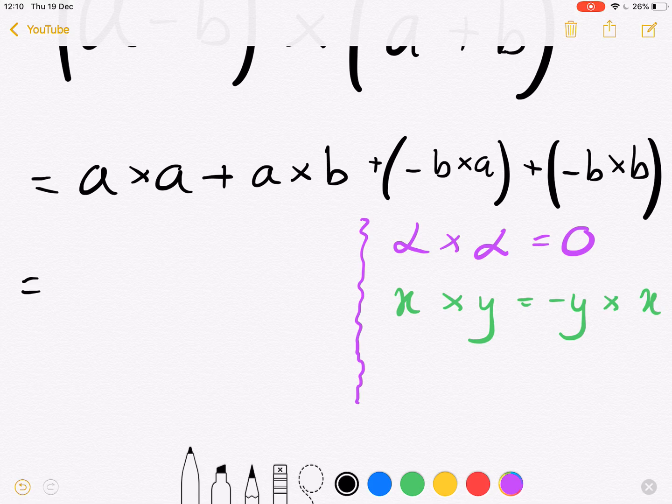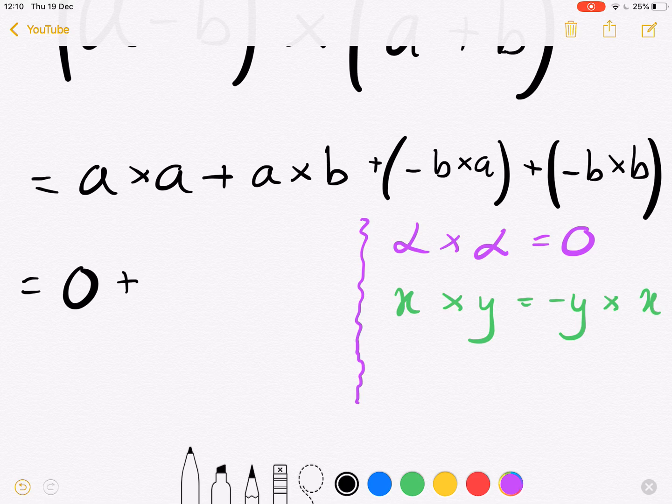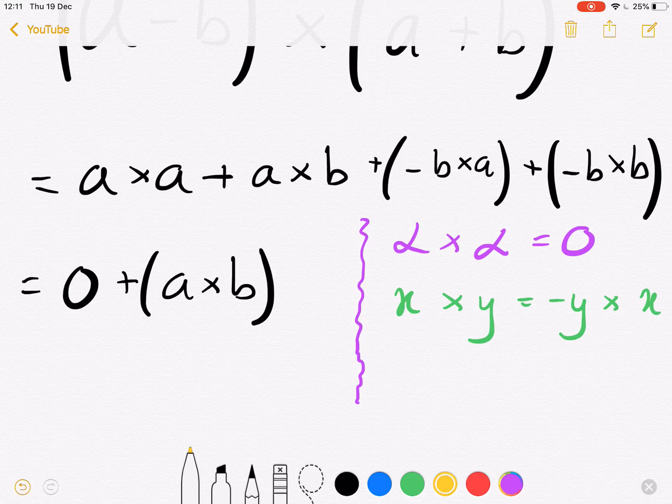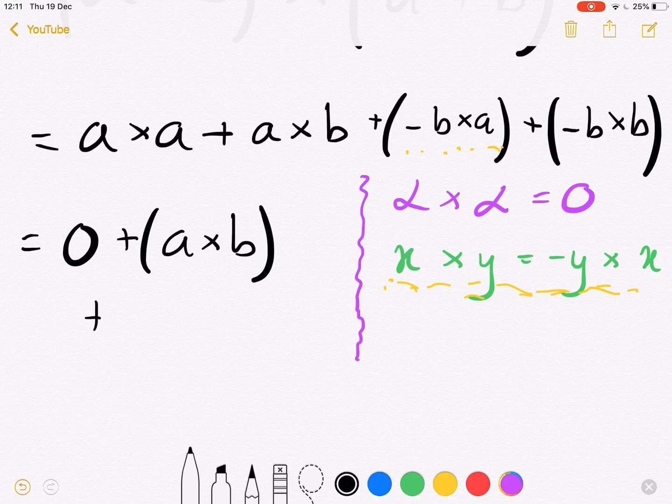Here we have a × a and they're vectors, so it's zero. Zero plus a × b, well we can't really simplify that so we'll just keep it as a × b. Then we can simplify the next term, and using this rule we can see that -b × a is the same as a × b. So that becomes plus a × b.